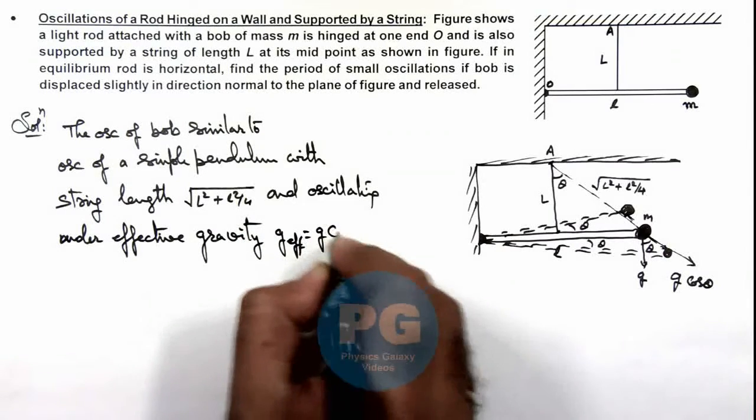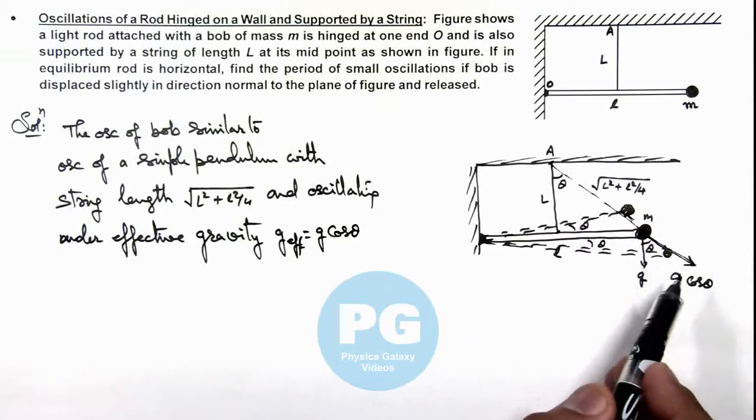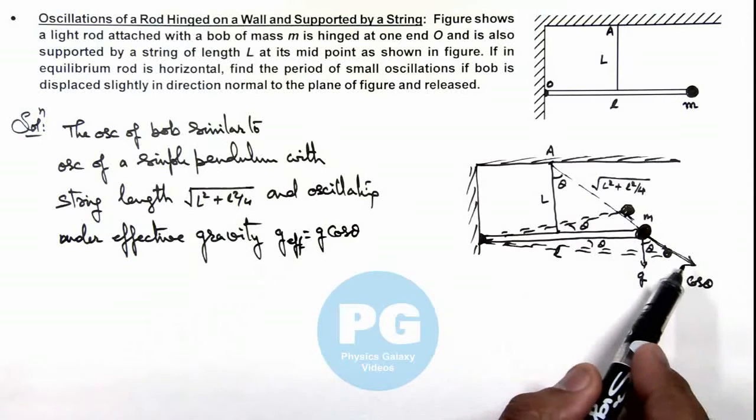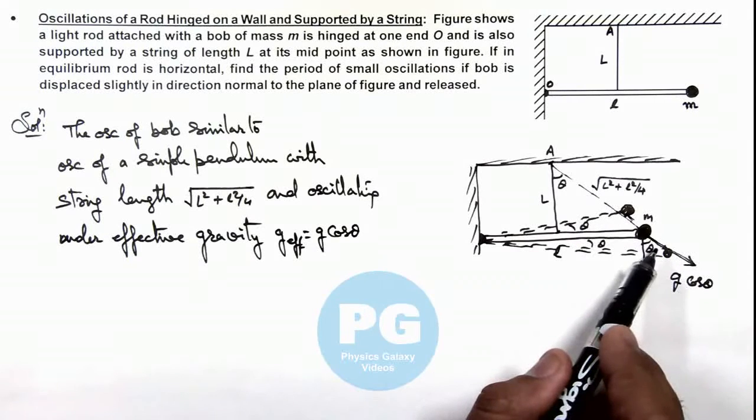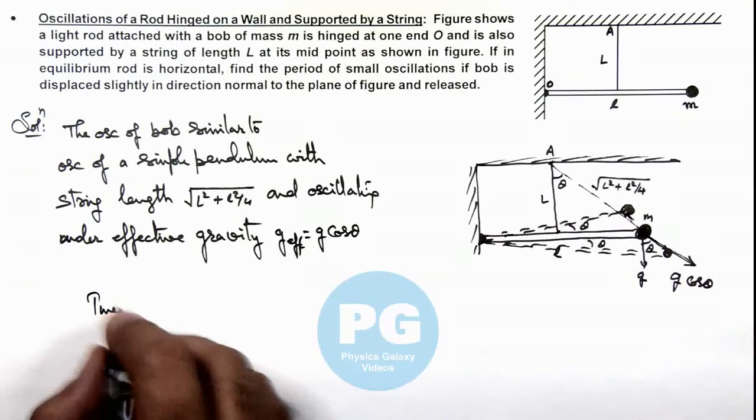Here you can see g cos θ is the effective force, or effective acceleration, under which the bob would be oscillating. So in this situation we can simply write the time period of oscillation.